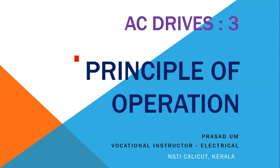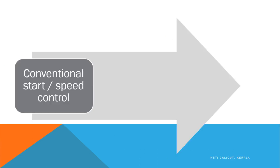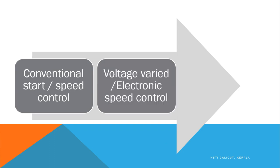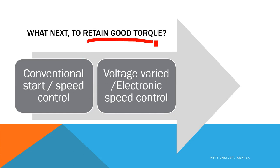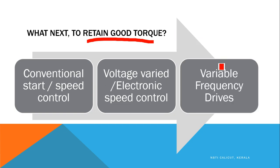AC drives part 3 video. Today we will be discussing the principle of operation of AC drives. We have made two videos before - the first was about conventional starting and speed control methods, and the second was the voltage varied method using a resistance regulator or triac regulator for ceiling fan type motors. Both methods have an issue with torque: when the voltage is reduced, the torque reduces. Torque is an essential component for every motor, so bigger power motors cannot be controlled with voltage variation. To retain good torque, we use variable frequency drives or AC drives.